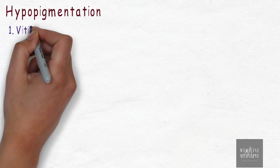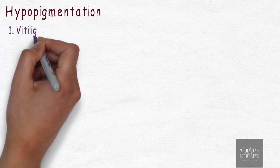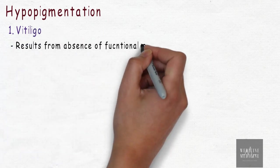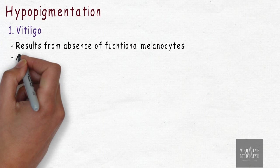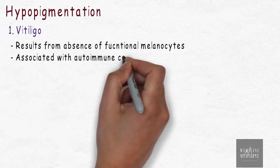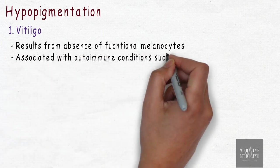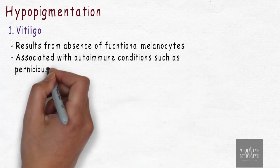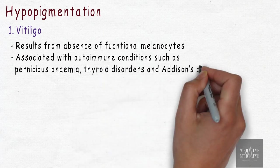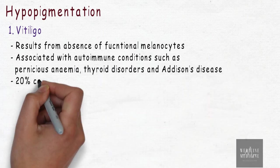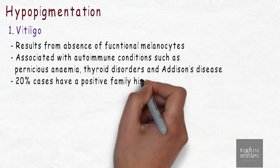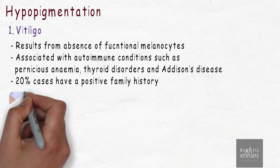First topic is vitiligo. It results from absence of functional melanocytes and is often associated with autoimmune conditions such as pernicious anemia, thyroid disorders, and Addison's disease. In about 20% of cases there is a positive family history.